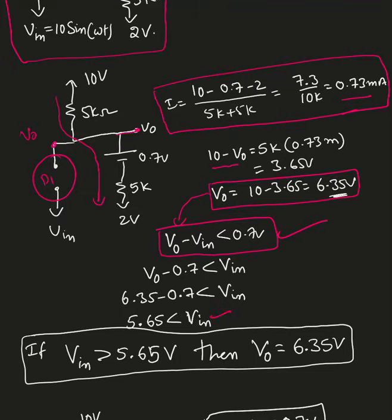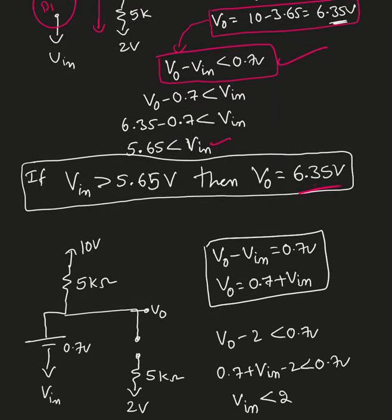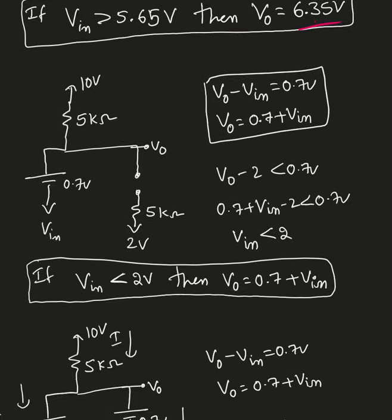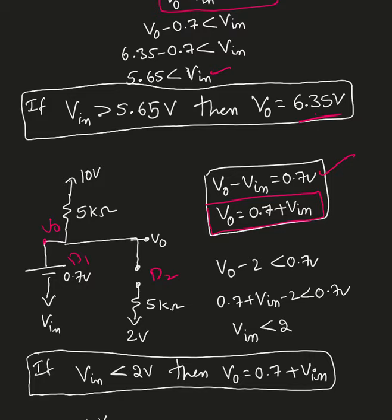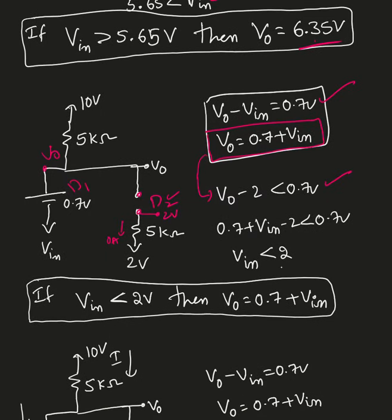That's the condition from Case 1 (D1 open, D2 closed). For Case 2, I assume D1 is closed and D2 is open. From this, V_out minus V_n equals 0.7V, so V_out = 0.7 plus V_n. Since D2 is open, no current passes through the 5k resistor, so that node is at 2 volts. The condition V_out minus 2 must be less than 0.7 gives V_n less than 2 volts.